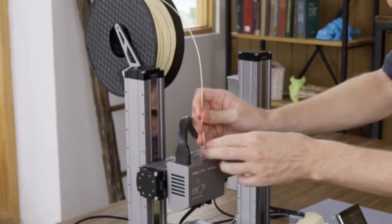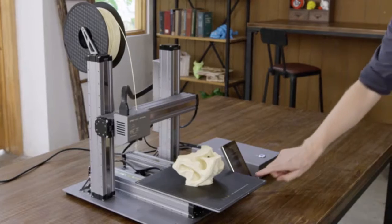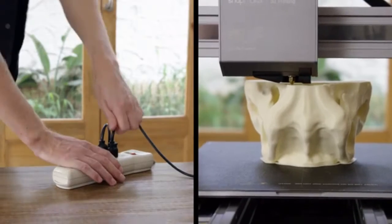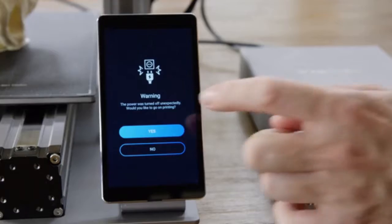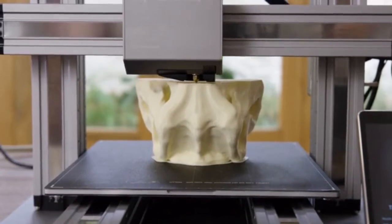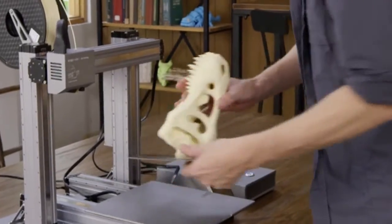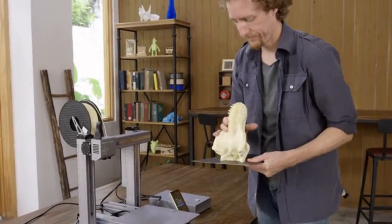If the filament runs out, Snapmaker will pause and notify you to load new filament. It can also detect power loss and resumes exactly where it left off, so you can recover any project. To remove a print, simply lift the build plate and flex it.